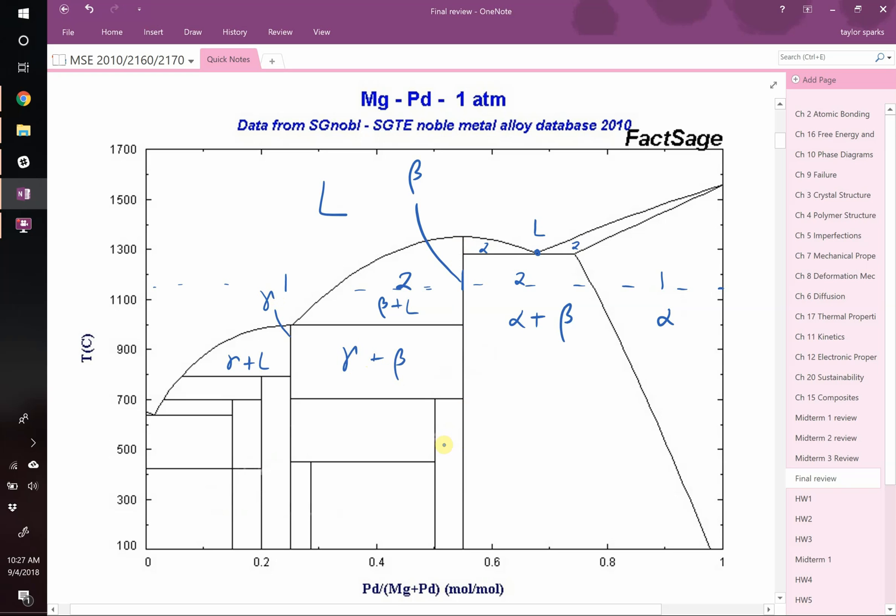So we know that right here we're going to have beta plus this compound, which is going to be a line compound as well. We'll call it epsilon, which makes this epsilon plus this line compound. We can call it, say, phi, epsilon plus phi. This is gamma. So that's going to be gamma plus what we called epsilon.